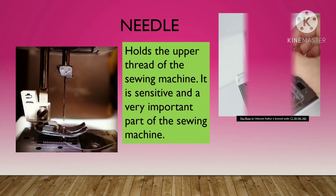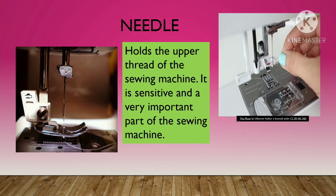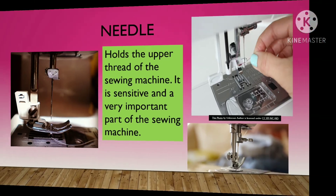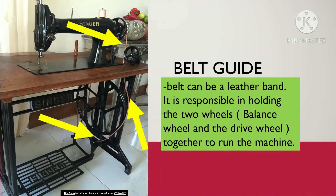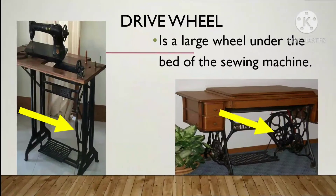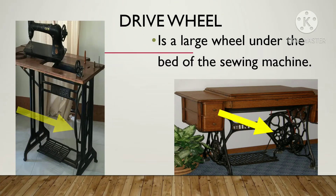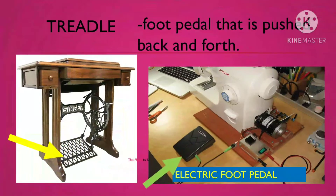The needle of the sewing machine is different from our manual needle. The belt — it can be a leather band — is responsible for holding two wheels together to run the machine. The drive wheel is a large wheel under the bed of the sewing machine. The treadle is a foot pedal that is pushed back and forth.